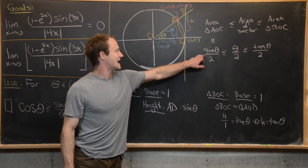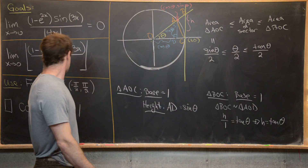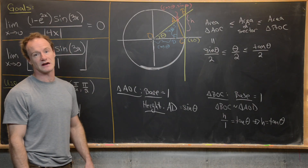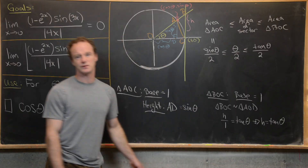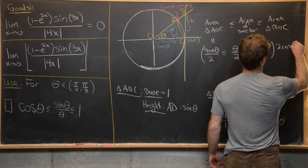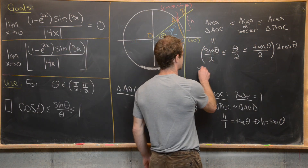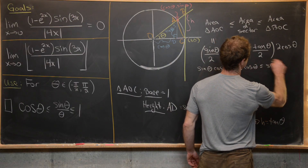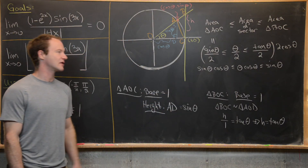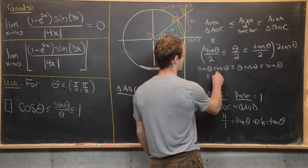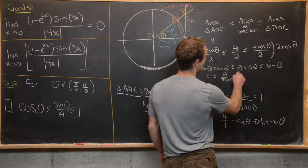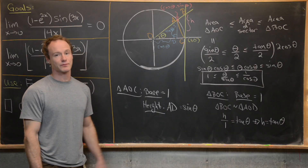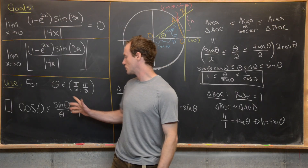Taking the reciprocal of this inequality gives our goal: cosθ ≤ sinθ/θ ≤ 1. We've now established this tool. We're ready to look at the floor limit, and we'll do this in two stages — the two one-sided limits. We'll look at the limit as x goes to zero from above of the floor of (1 − e^(2x))·sin(3x) / (4x).